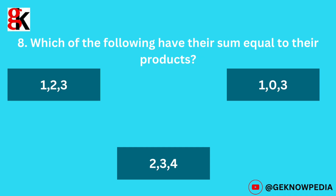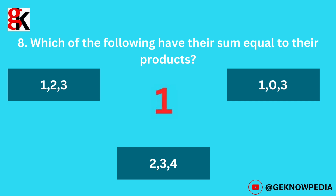Eighth question. Which of the following have their sum equal to their product? Options: 1, 2, 3 — or — 1, 0, 3 — or — 2, 3, 4. The correct answer is 1, 2, 3.